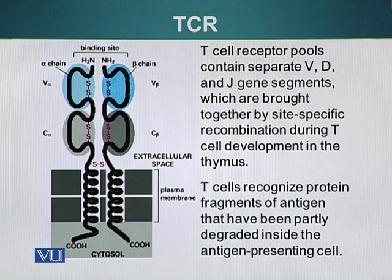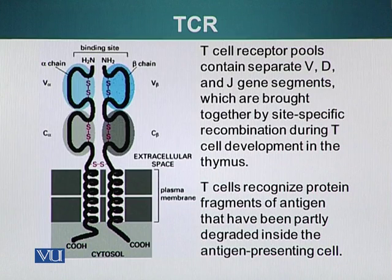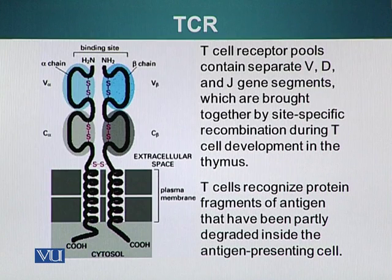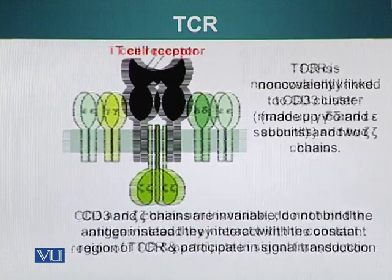T cell receptors recognize fragments of antigen, whereas B cells and their antibodies can recognize the intact antigen. A key difference between BCR and TCR is that the TCR cannot recognize antigen on its own — it needs help from MHC molecules that display these antigens. Another difference is that the binding of T cell with antigen located on the surface of MHC molecules is very weak, so co-receptors are needed to stabilize this interaction. We will talk about those co-receptors later on.